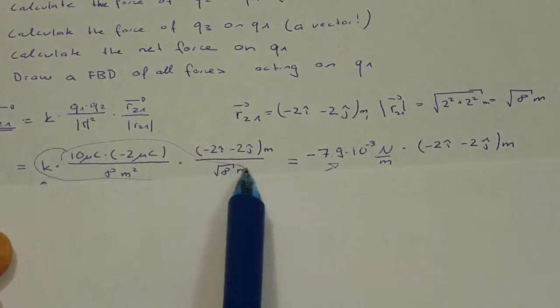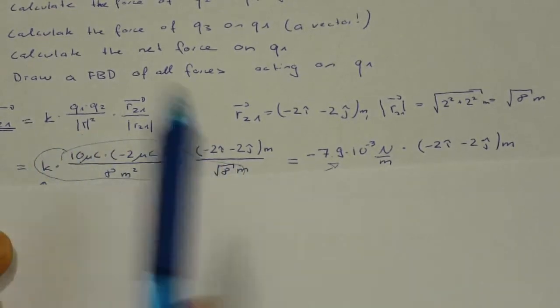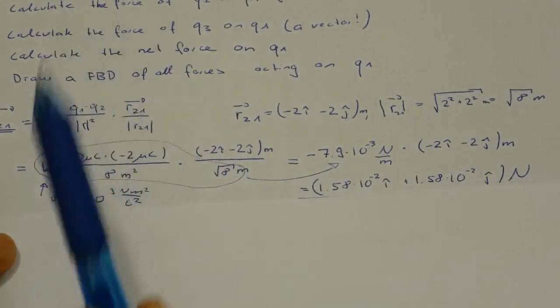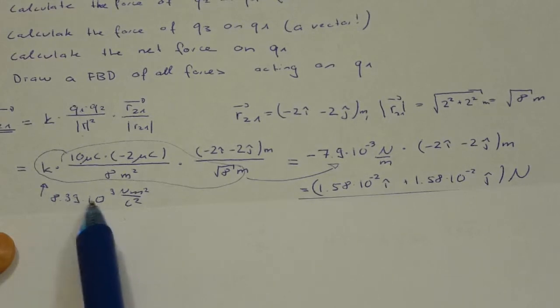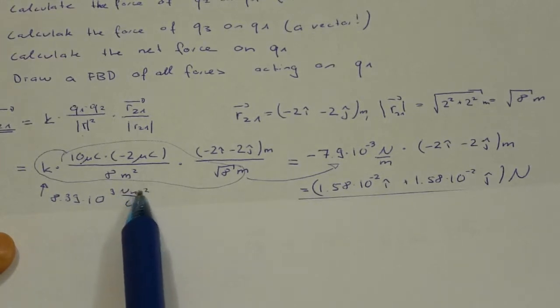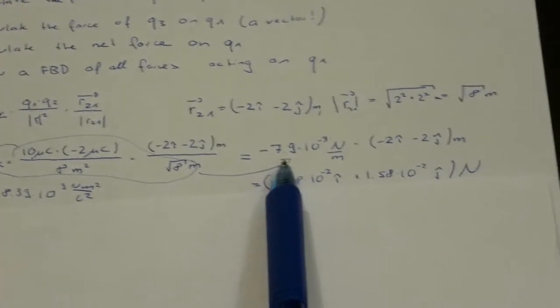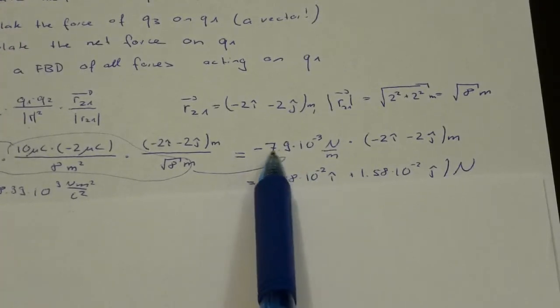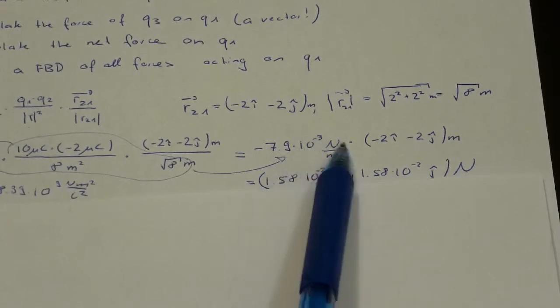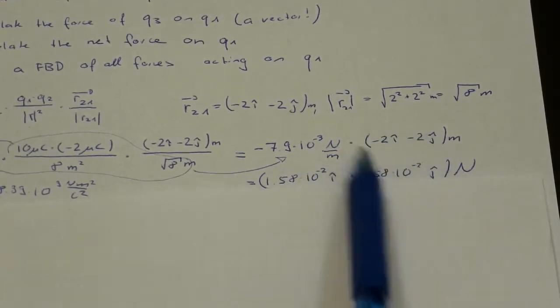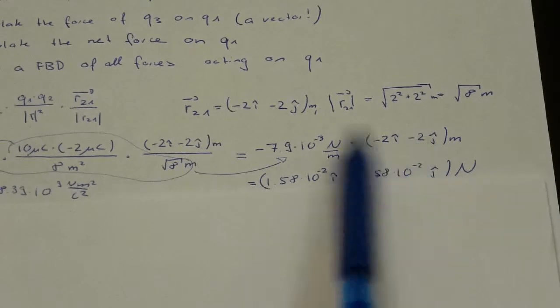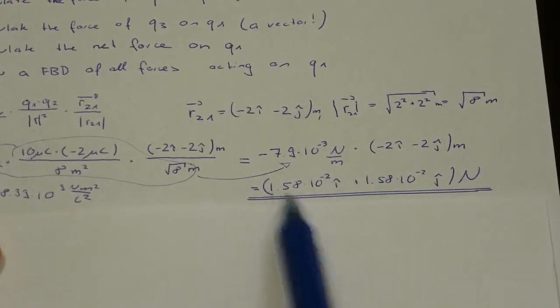I actually know that k is 8.99 times 10 to the 9 newton square meters divided by coulomb squared. I get a result of minus 7.9 times 10 to the minus 3 newtons per meter times still my vector r from 2 to 1. If I multiply that in, I get the final result.